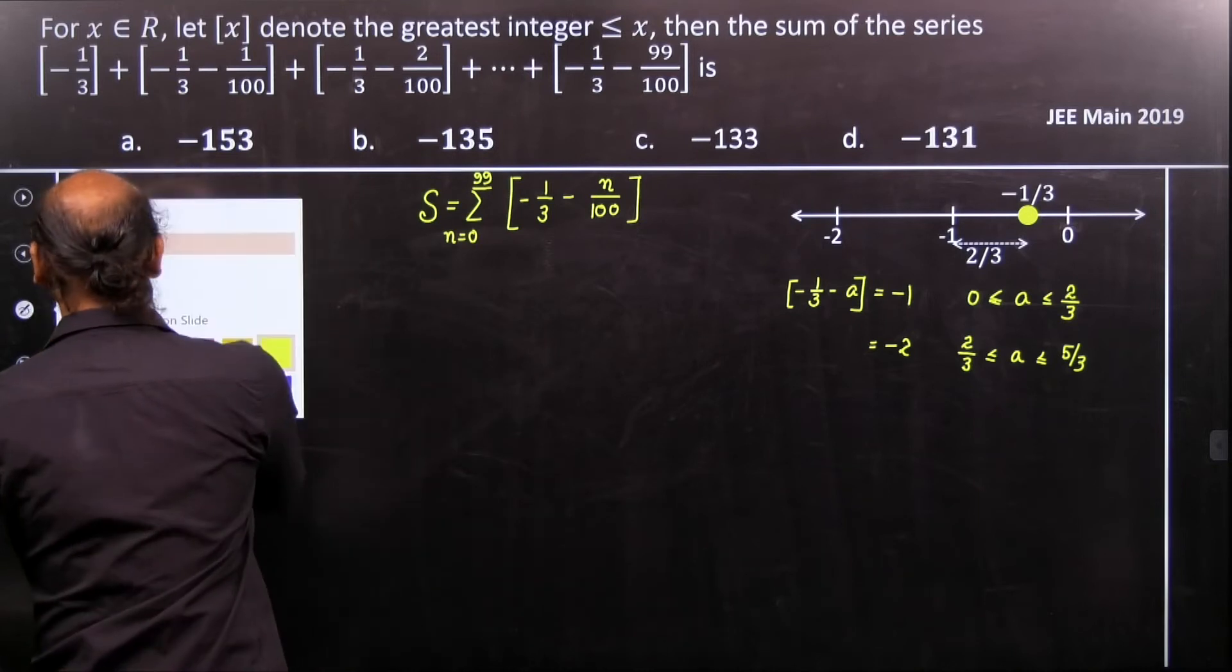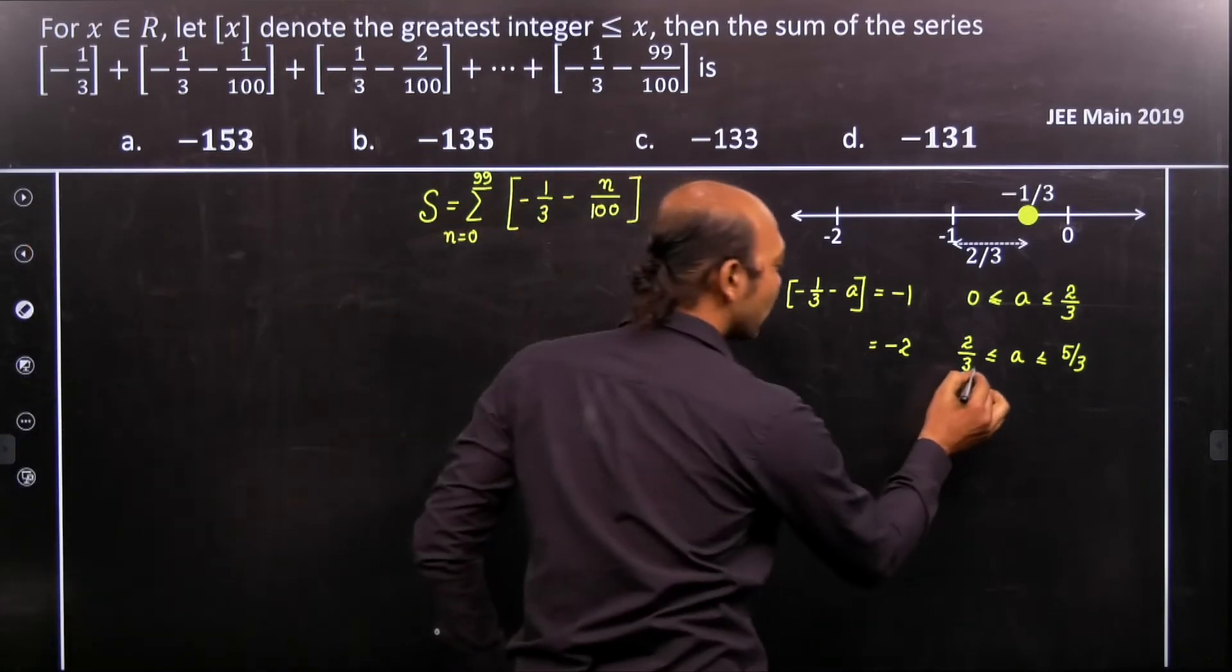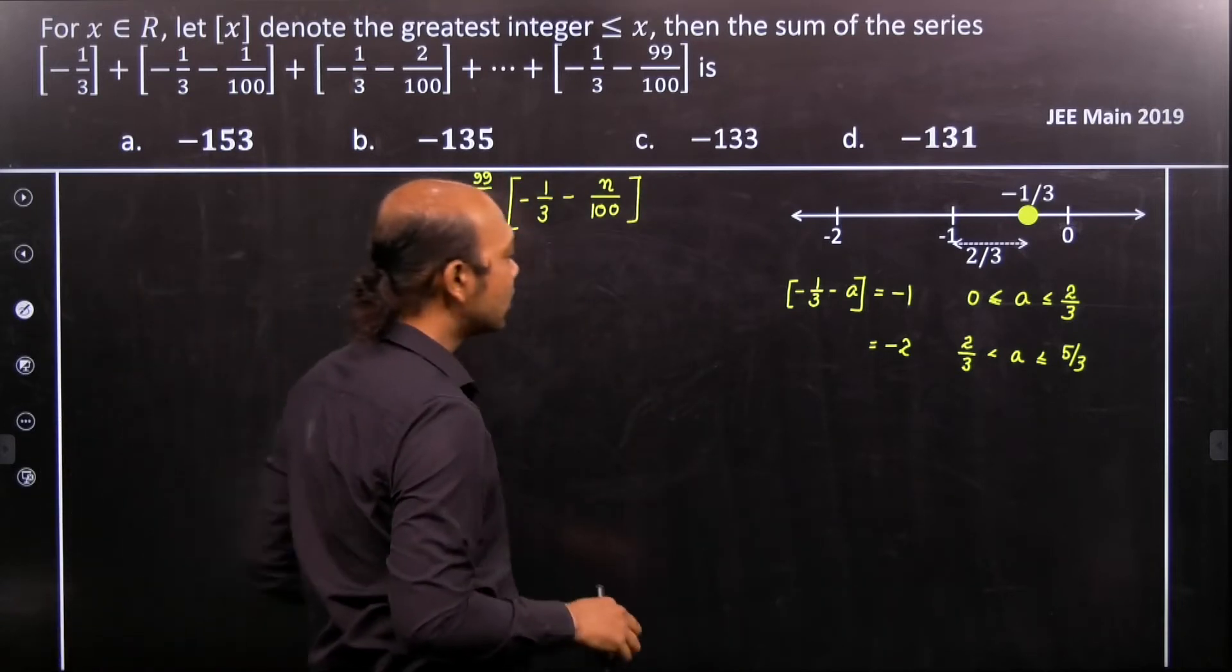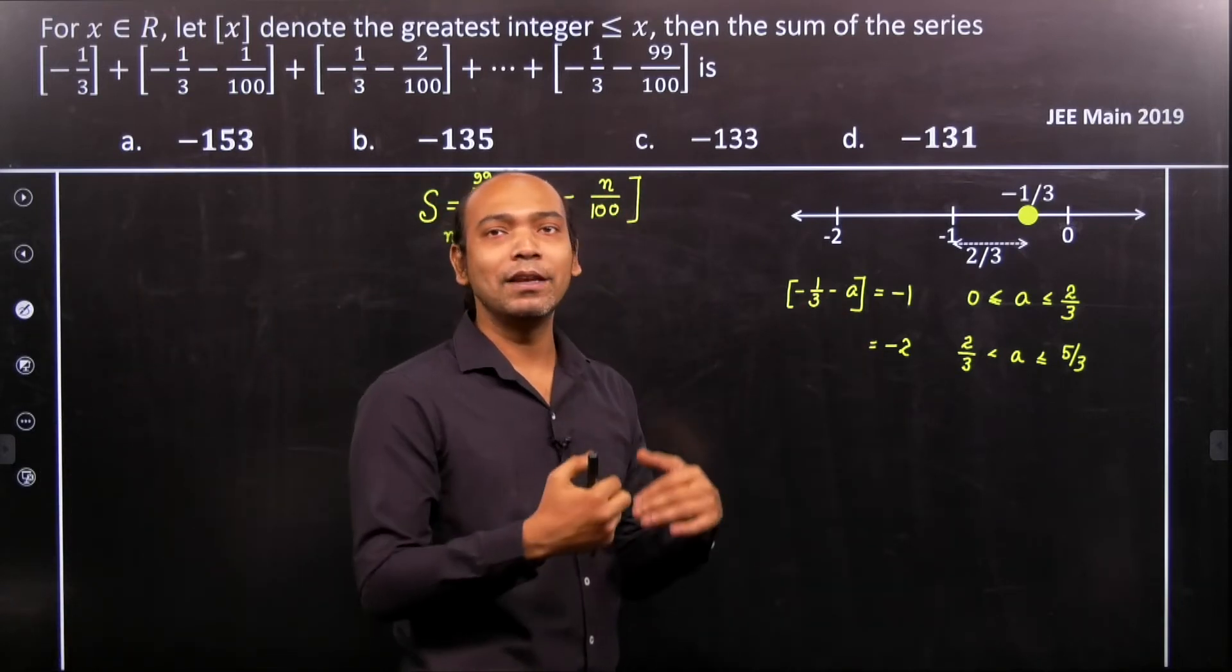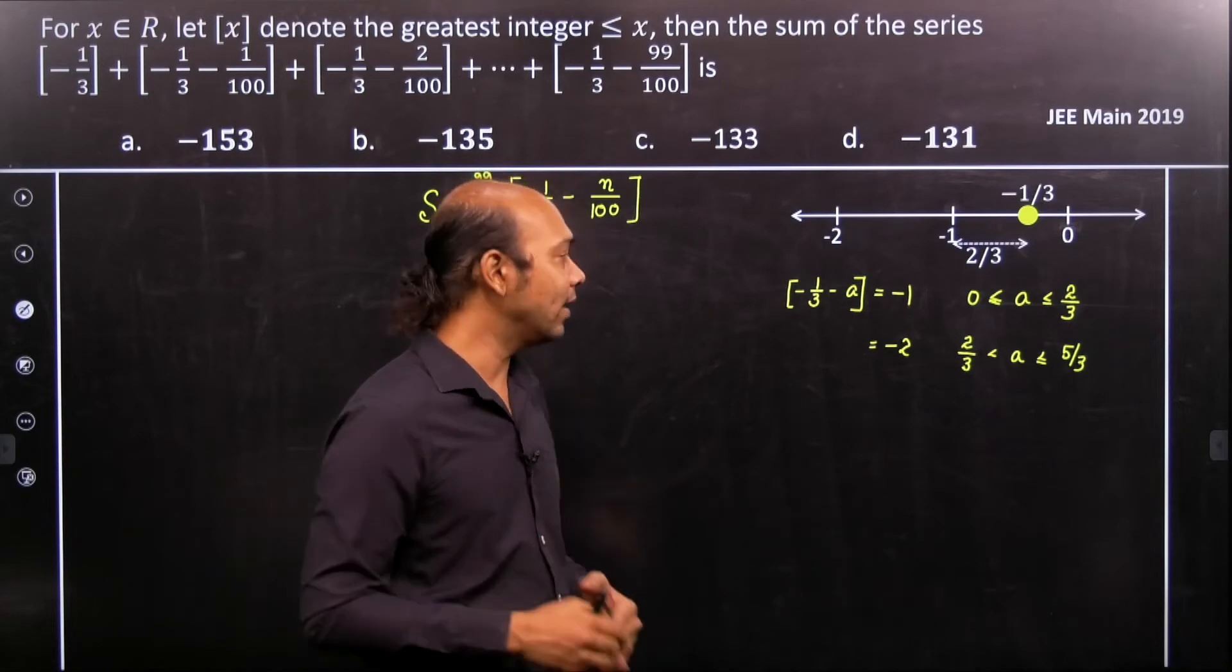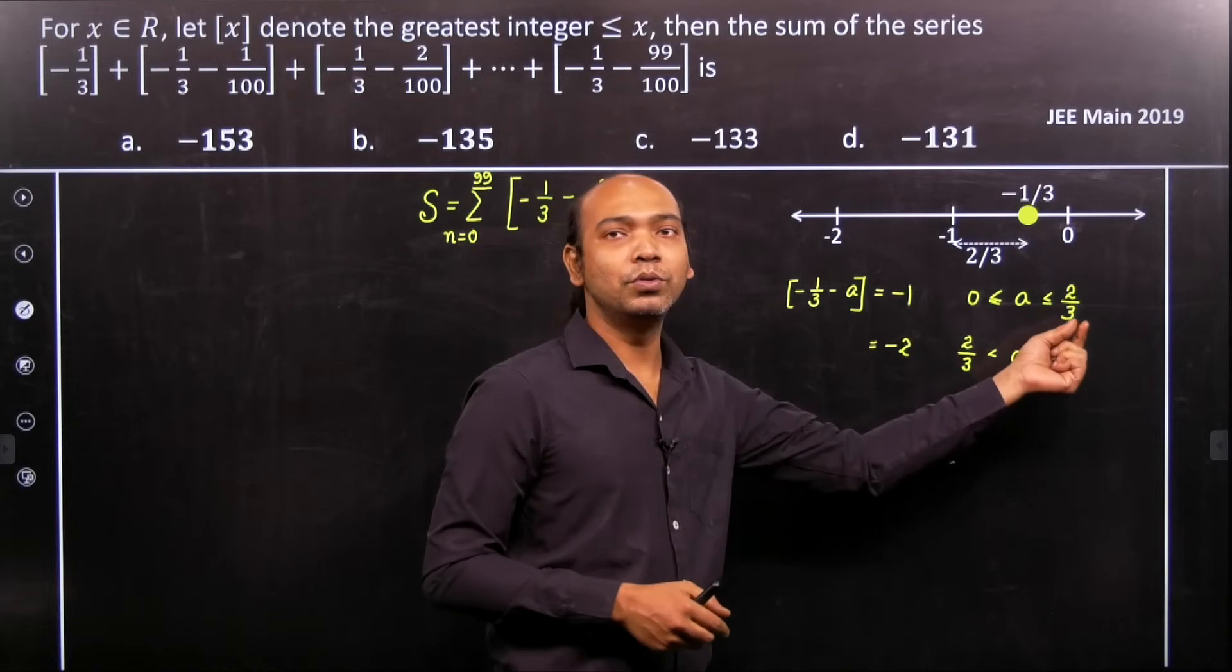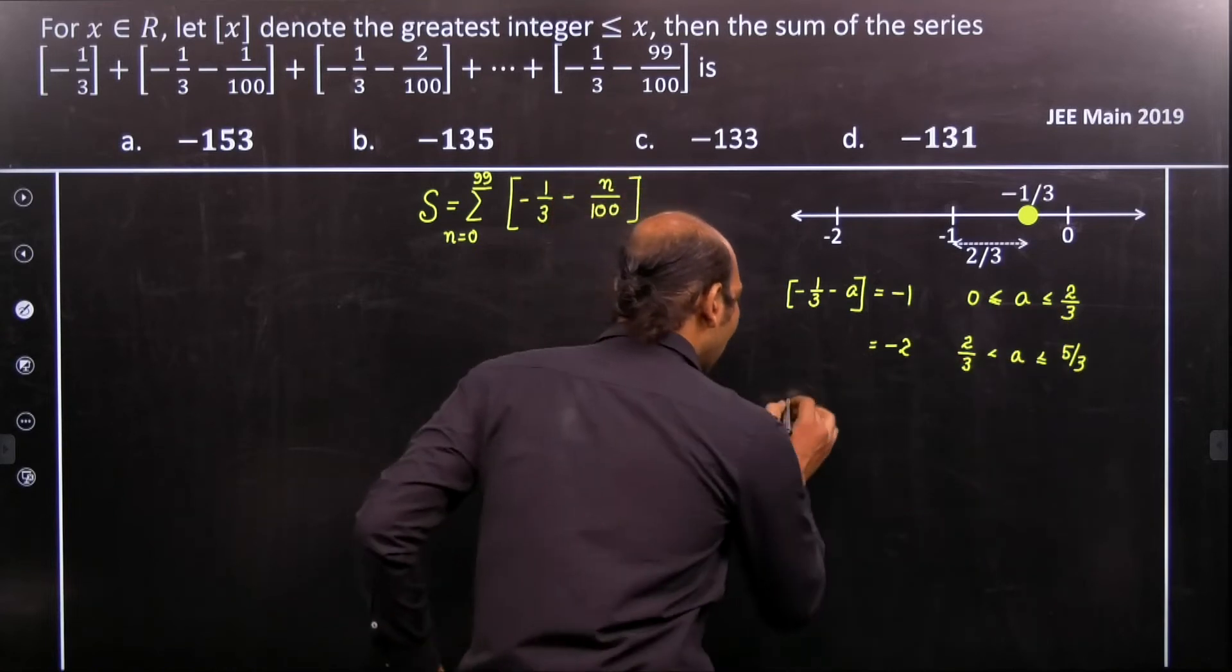Our aim is to calculate n so that n by 100 equals 2 by 3. Here I consider that a equals 2 by 3, that implies n by 100 equals 2 by 3.